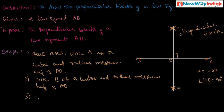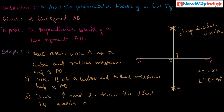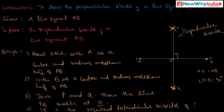Step three: join points P and Q. The line PQ meets the line segment AB at point O. Step four: PQ is the required perpendicular bisector of AB. This completes the construction of the perpendicular bisector of a line segment.